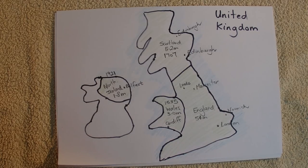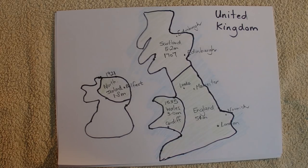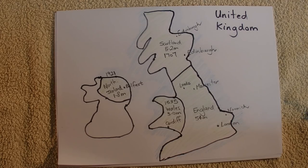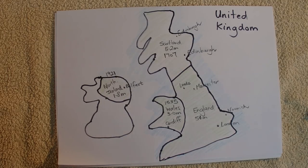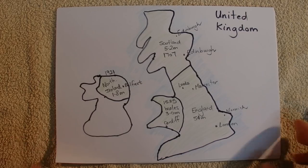The United Kingdom is a parliamentary democracy based on a constitutional hereditary monarchy, just like Australia. Queen Elizabeth the Second is the Queen of the United Kingdom and she's head of state. Similar to Australia, we've got the Governor General who is the Queen's representative and becomes head of state. The parliament — Theresa May is the current Prime Minister of the United Kingdom.